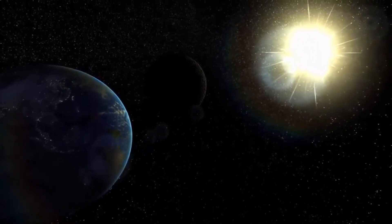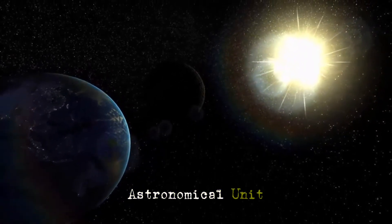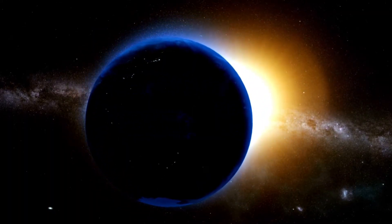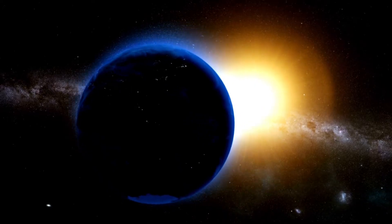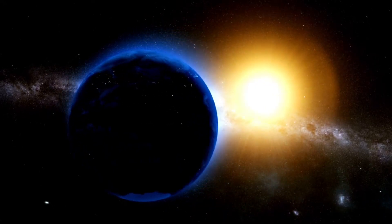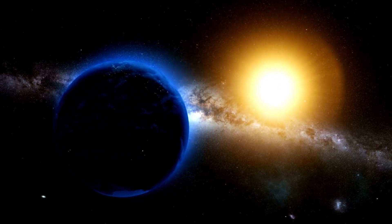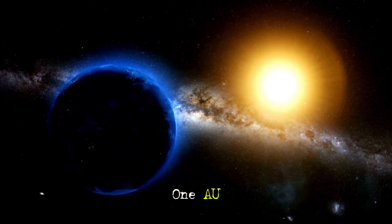So astronomers use a different measure known as an astronomical unit or AU, which is defined as the average distance from Earth to the sun. So whenever you hear astronomical unit or AU, you can think, that's the distance from Earth to the sun. And that's exactly one AU.